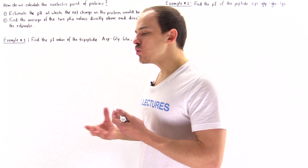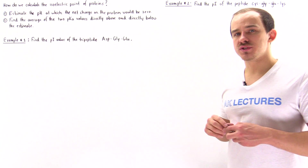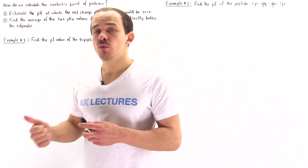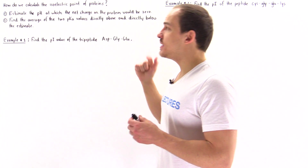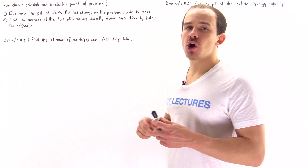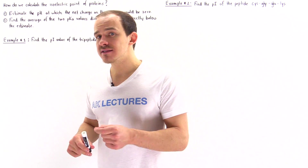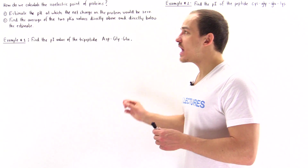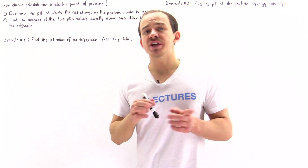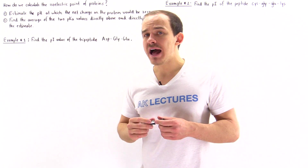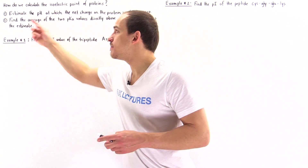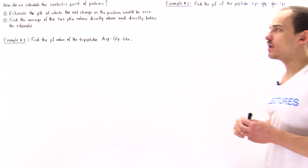The general rule is to follow two steps. In step one, we estimate what the pH value is at which that protein would have a net charge of zero. In step two, we use that estimated pH value to find the average of the two pKa values right above and right below that estimated pH obtained in step one.